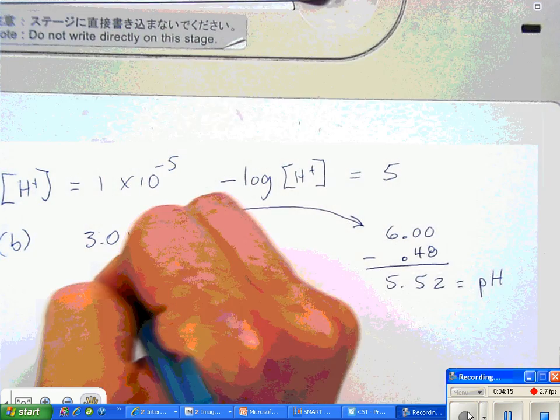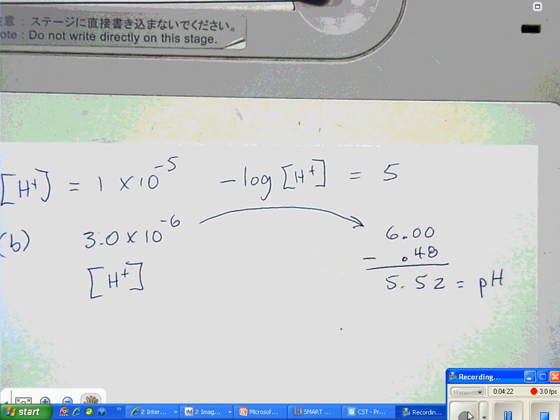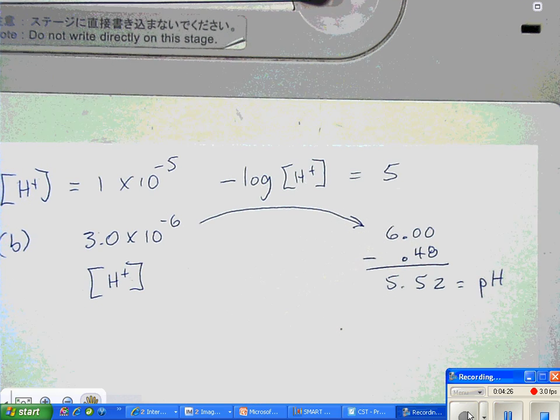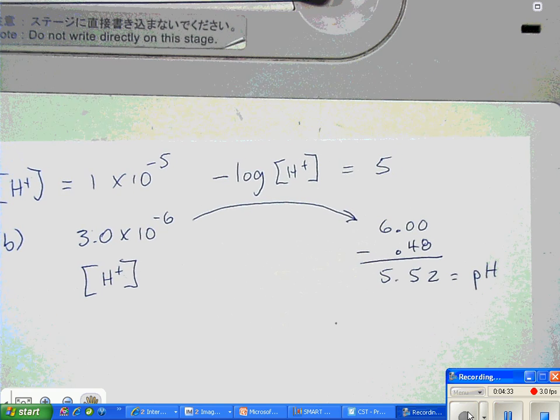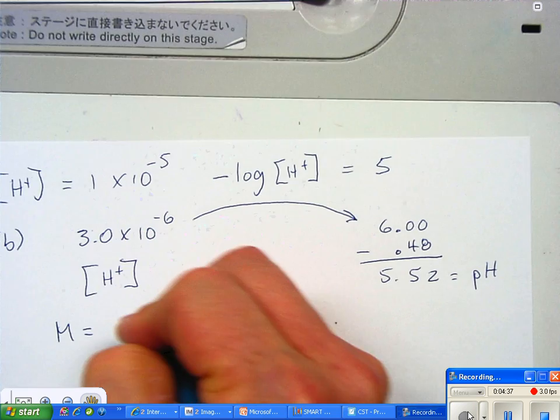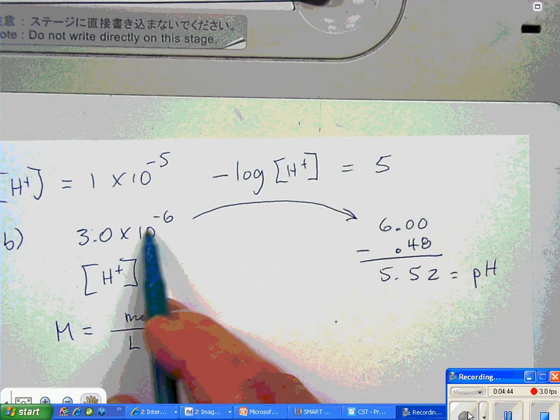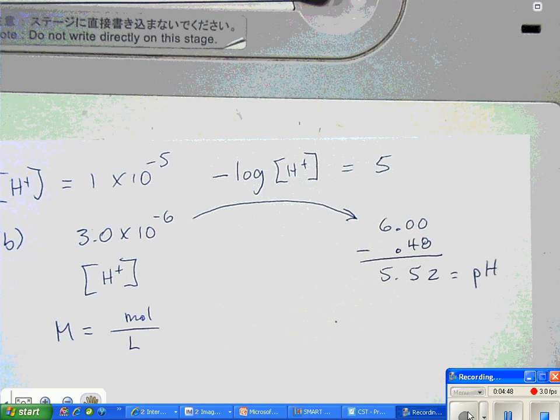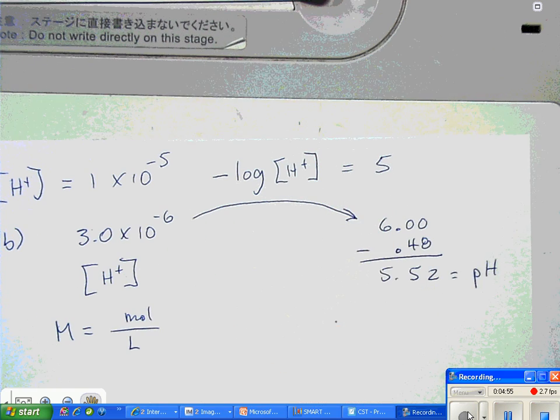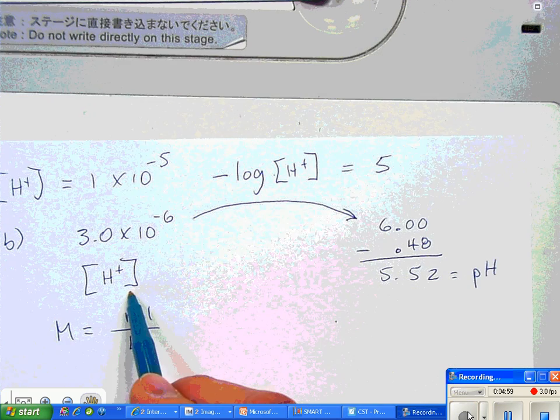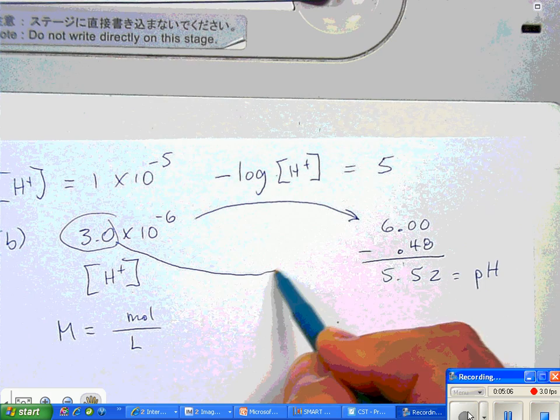Because this guy was the hydrogen ion concentration, and the little brackets here with the ion in the middle tells you we're looking at concentration. What is concentration? What's the letter for concentration? Big M. And big M is what over what? M equals moles over liters. So in this case this would be 3.0 times 10 to the minus 6 moles per liter. That's the concentration, and we just change that to a pH by taking the minus log of that concentration. The 3 came from the log table to give us this number.